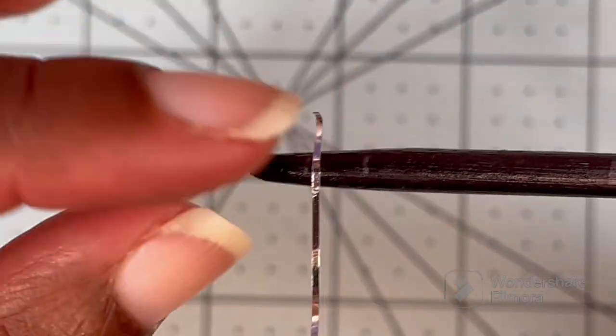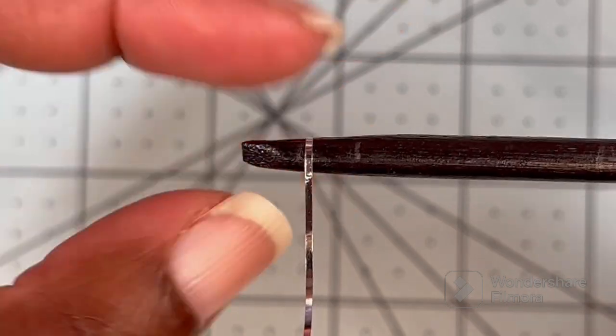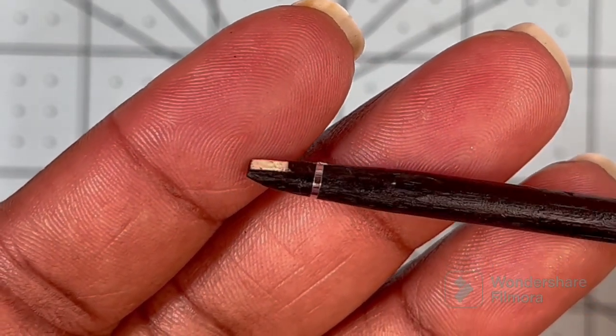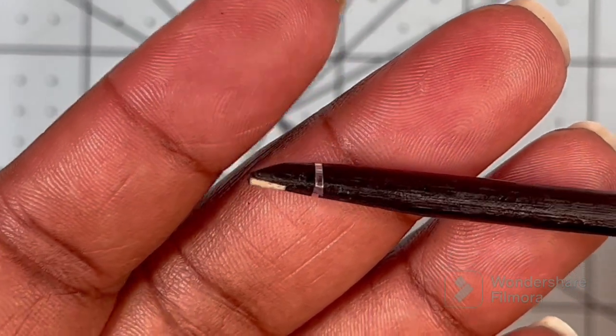So just take the silver tape and wrap it around. And it should look like this. And I'm going to do the other points.